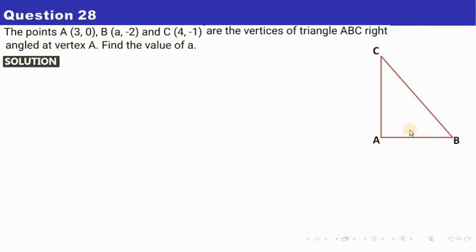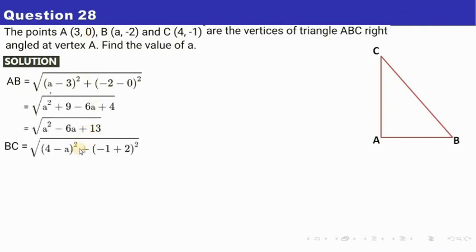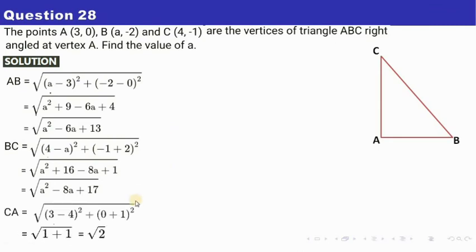So from the figure we see that BC is the hypotenuse. So we have to make use of Pythagoras theorem here. So let us find AB. So AB is equal to this much, similarly find BC and now I am not going to explain you how we are getting this much. So you are quite familiar with this. Similarly find CA. Now CA is √2 from here.